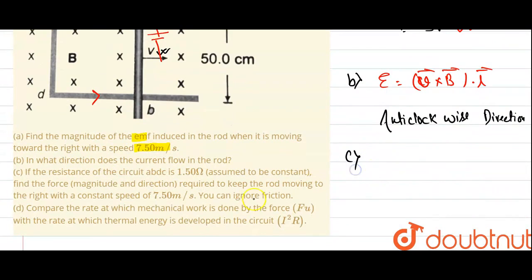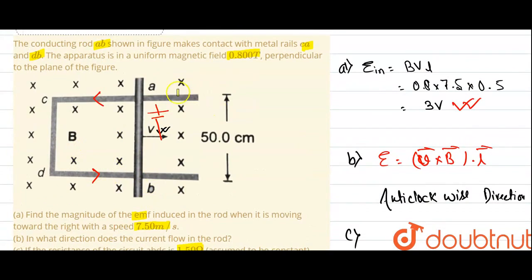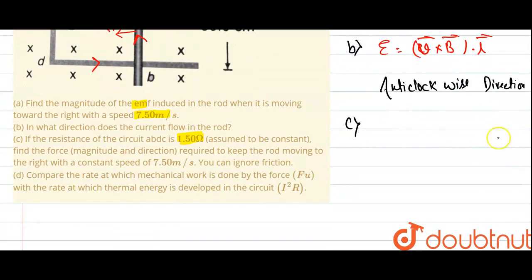Now in part C, if the resistance of the circuit is 1.5 ohms, find the force required to keep the rod moving with this velocity. There is resistance in the rod and we want to move the rod with a constant velocity V. There must be an external force which can cancel the effect of the magnetic force. That external force will be equal to the magnetic force.